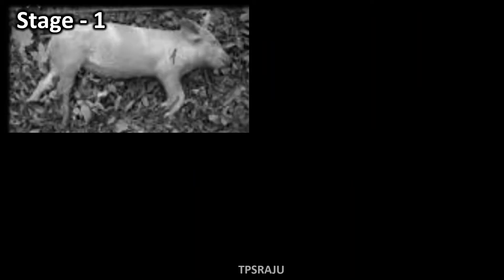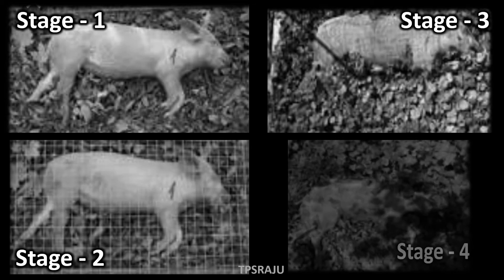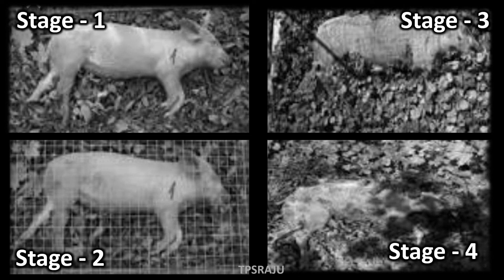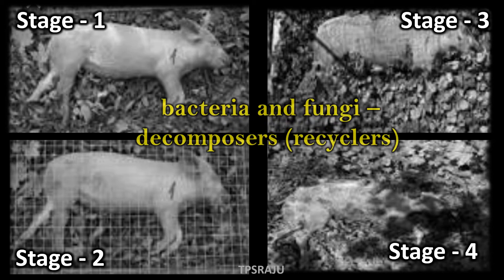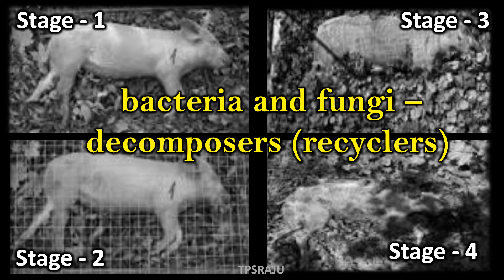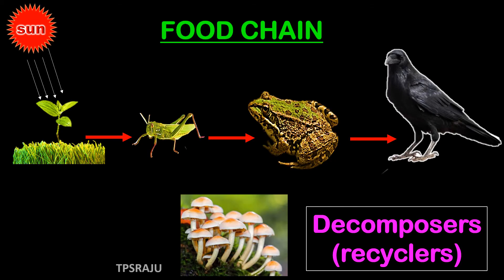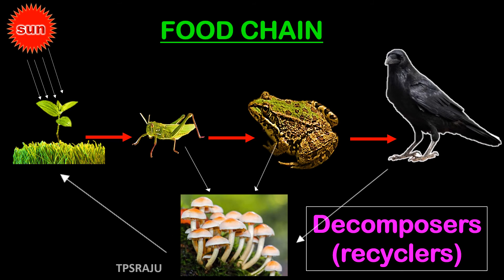Finally, we are going to learn about decomposers. Look here — this is a dead body of an animal. After some days, it will decompose and mix into nature. How is it possible? Some microorganisms like bacteria and fungi get energy by the breakdown of dead plants and animals. So they are called decomposers. They break complex substances into simple substances that go into the soil and are used by plants. Thus, they help in the cycling of materials between producers, consumers and soil. So they are also called recyclers.